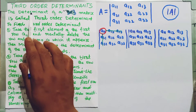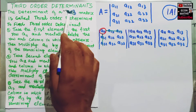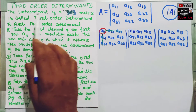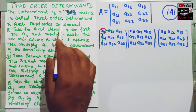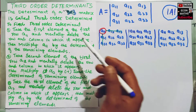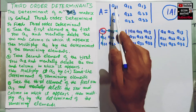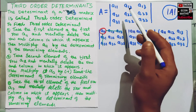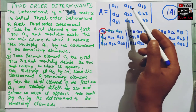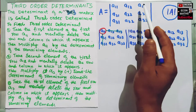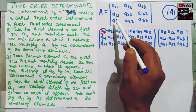The determinant of a 3 by 3 matrix is called a third order determinant. A 3 by 3 matrix means a matrix where there are 3 rows and 3 columns.